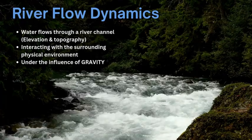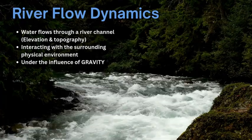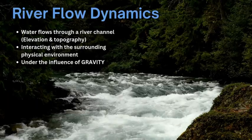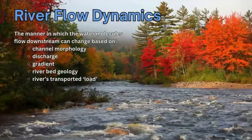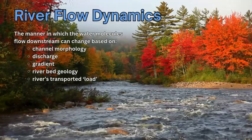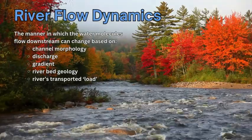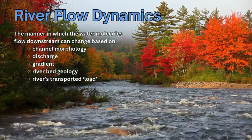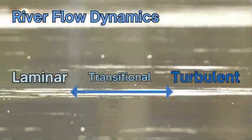Water that flows through a river or stream is influenced by gravity, the topography, elevation and the physical environment. A river's physical environment can include the channel morphology, the discharge, the gradient, the riverbed geology and the load which is being carried by the river.